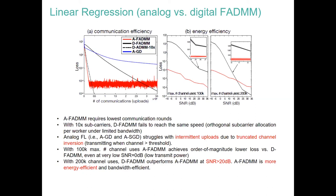If you multiply the number of resources by 10, the analog and digital performance starts to be on par. On the right-hand side we plot the energy efficiency for the communication part — training loss versus signal-to-noise ratio for analog (red) and digital (black) for two numbers of channel uses: 100K and 200K. Again, analog outperforms digital. However, if you allocate 200,000 resources for clients, digital starts to outperform analog, but only at a very high signal-to-noise ratio.